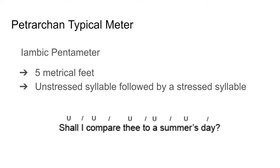The typical meter of a Petrarchan sonnet is iambic pentameter. Iambic pentameter consists of five metrical feet in each line, where a foot is one unstressed syllable followed by a stressed syllable. So this is an example from a Shakespearean sonnet: "Shall I compare thee to a summer's day?" — shall is unstressed, I is stressed, and so on, and it creates this rhythm when you read it.